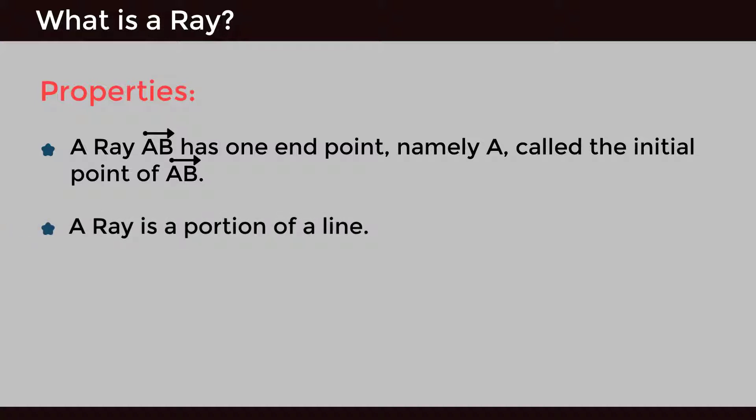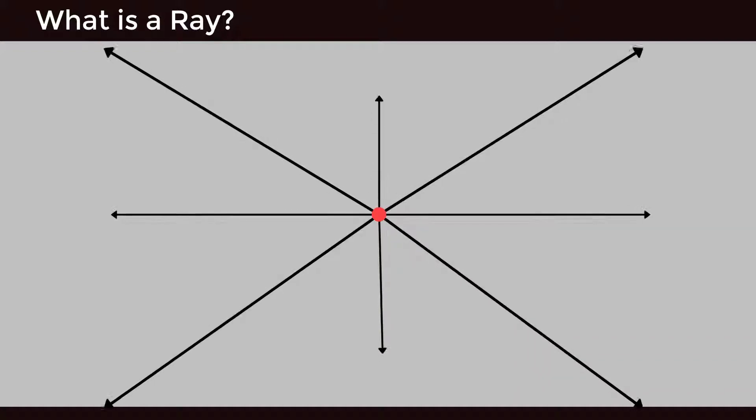A ray is a portion of a line. A ray doesn't have a definite length. Any number of rays can be drawn with the same initial point.